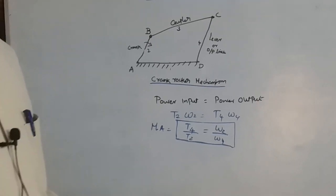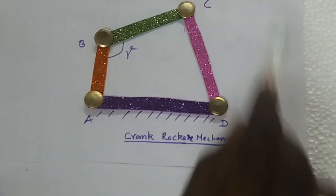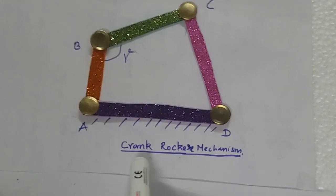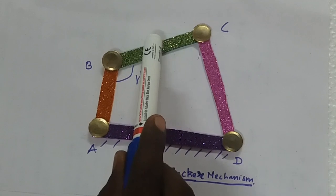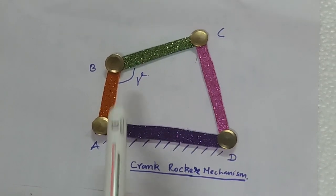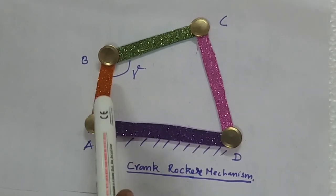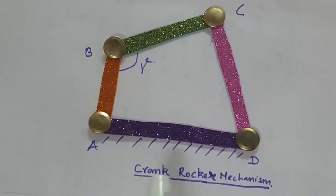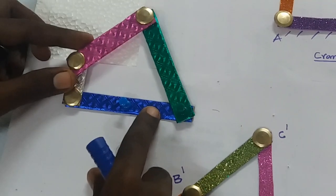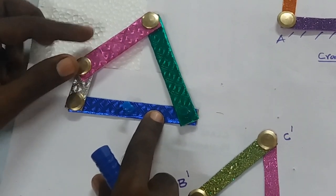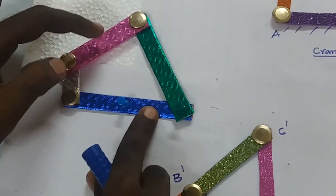Now I show the model. This is a model of the crank-rocker mechanism. This is the frame, crank, coupler, and output link. Here gamma — gamma means the angle between the crank and the coupler. So it is the four-bar or crank-rocker mechanism.